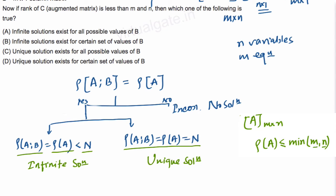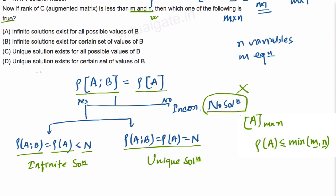Let us go to our options. The question asks: if the rank of the augmented matrix is less than both m and n, which of the following is true? To reach a conclusion, we first need to determine whether the rank of the augmented matrix equals the rank of the coefficient matrix. From the given information we cannot directly determine this, but looking at the options, there is no option saying 'no solution' — all options involve either infinite or unique solution. So we assume the system is consistent.